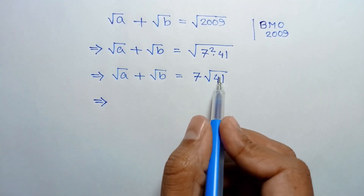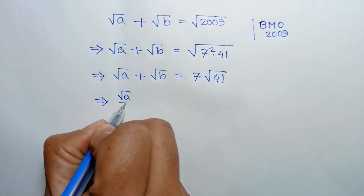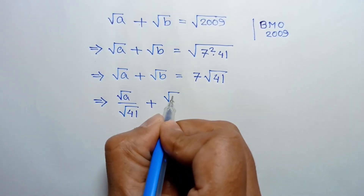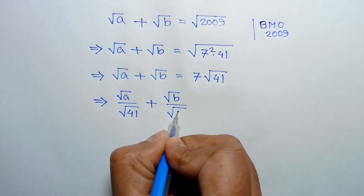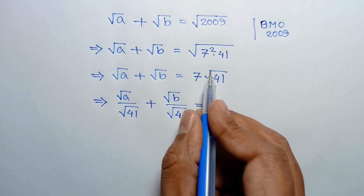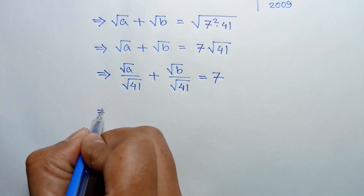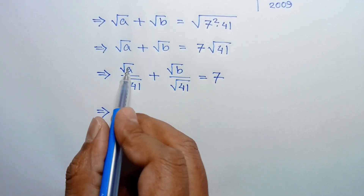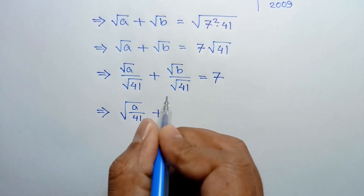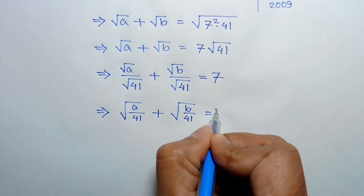Dividing both sides by square root of 41, we get: square root of a over square root of 41, plus square root of b over square root of 41, equals 7. This can be rewritten as square root of a over 41, plus square root of b over 41, equals 7.